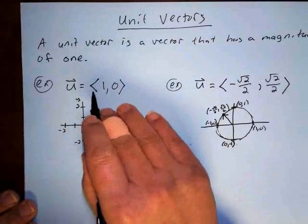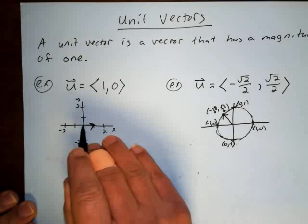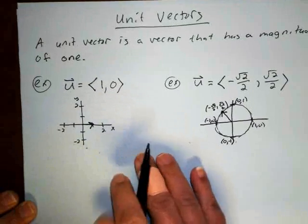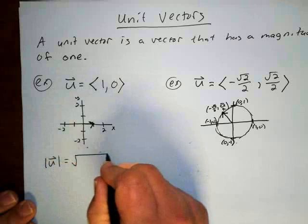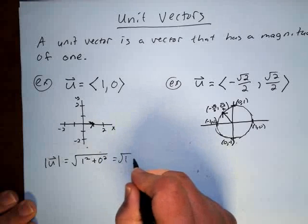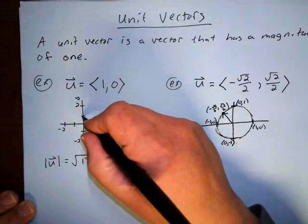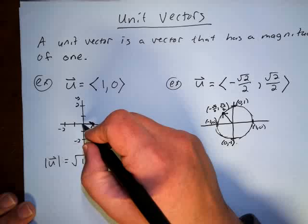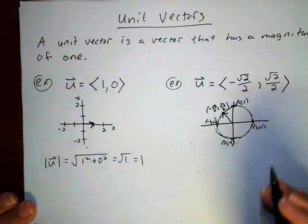Here are a couple obvious examples of unit vectors. The vector (1, 0) is the horizontal vector that goes from the origin out to 1, and it obviously has a length of 1 — using the magnitude formula, 1 squared plus 0 squared gives the square root of 1, which is 1. Similarly, (0, 1), (-1, 0), and (0, -1) are all unit vectors.